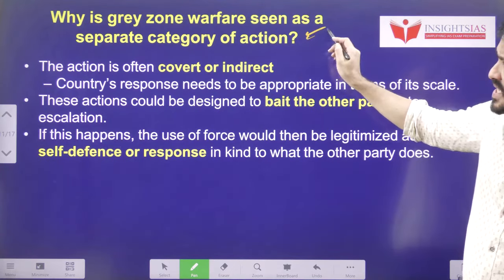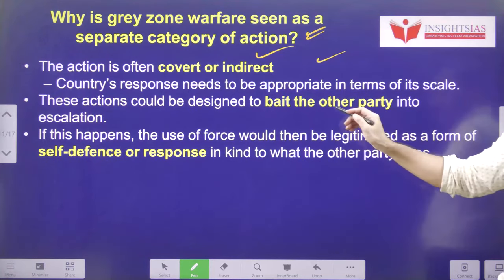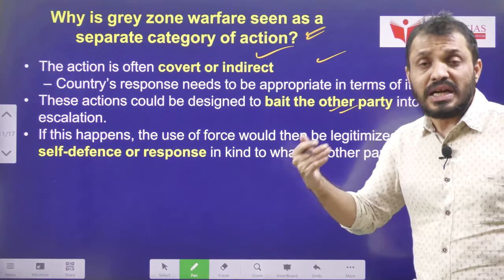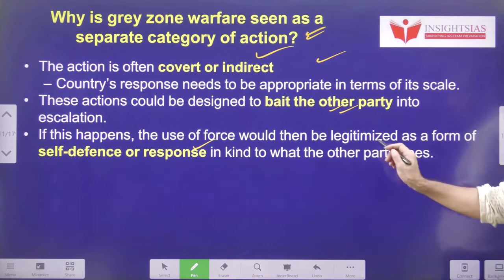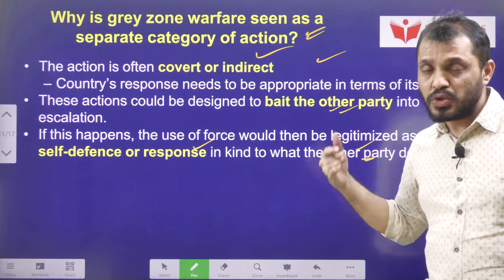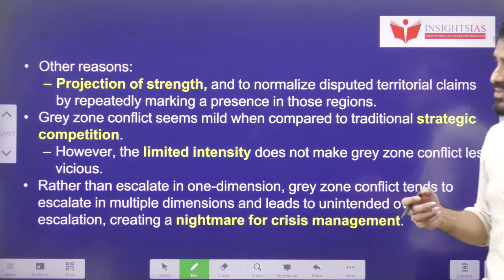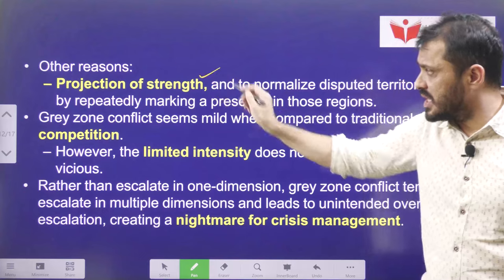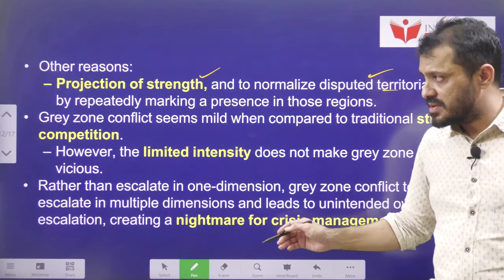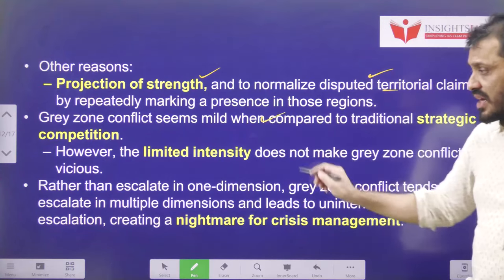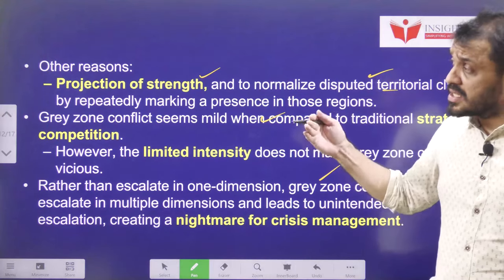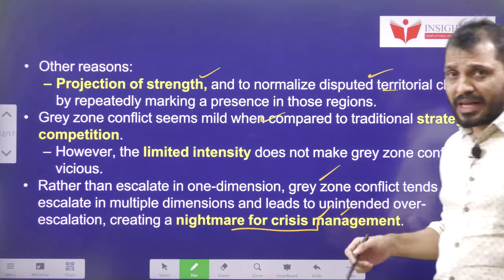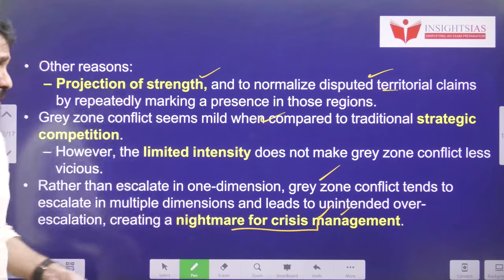Why is gray zone warfare seen as a separate category? Because it is indirect in nature. The country would like to bleed the adversary so that the adversary reacts as part of self-defense and the action escalates. It is provoking indirectly through various means. The reasons include projecting strength, normalizing disputed territory, and serving countries that cannot compete in traditional warfare. Crisis coming out of this kind of warfare is also a very difficult nightmare to manage.